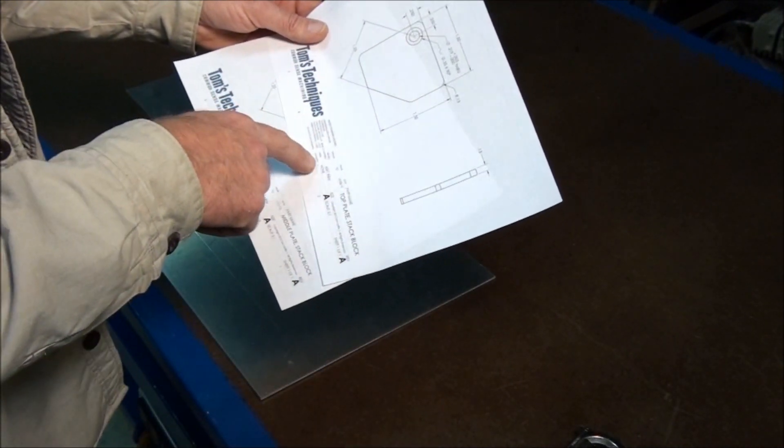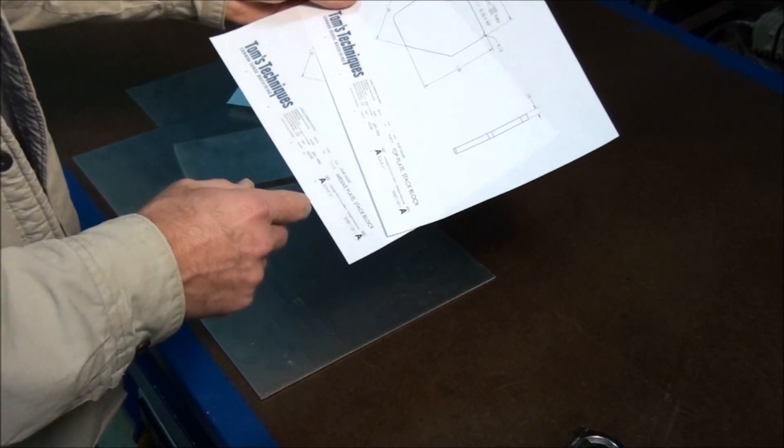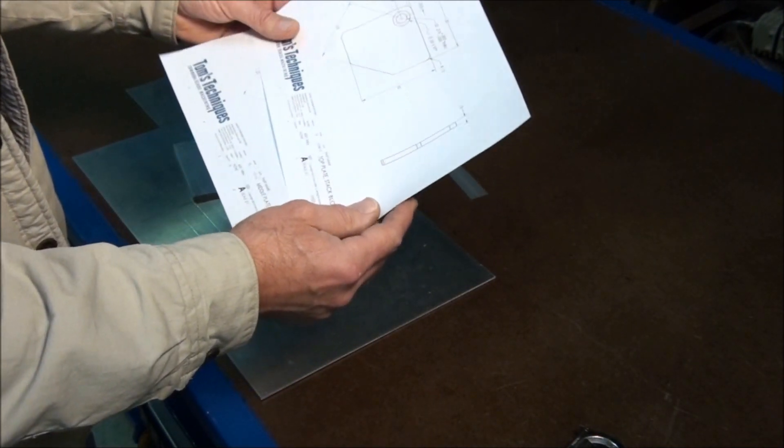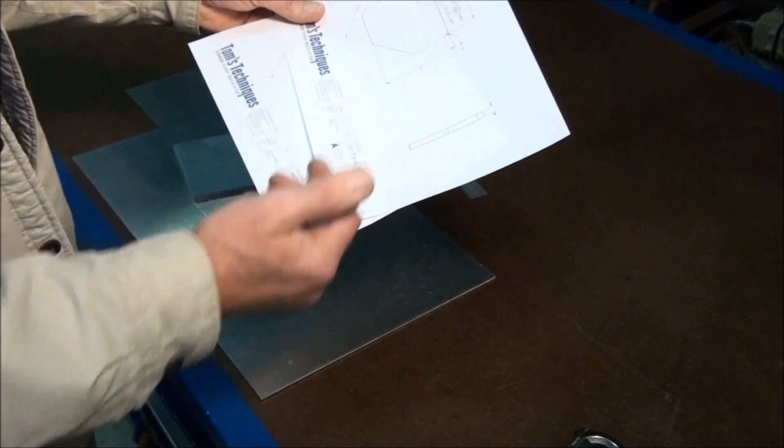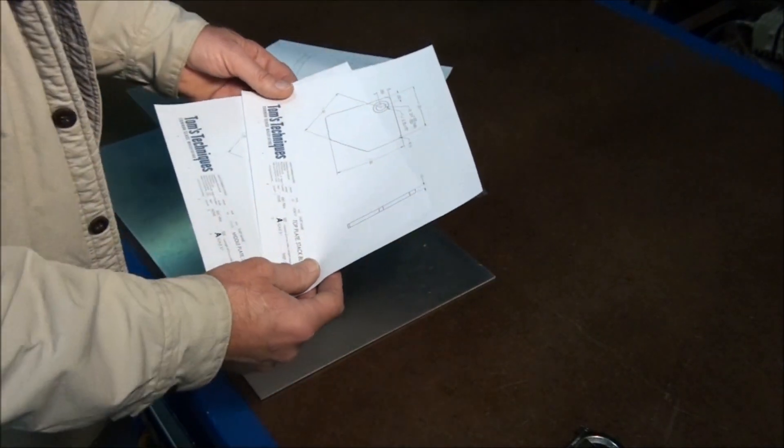Quantity-wise, we have a quantity of one of the top plate and a quantity of 10 of the middle plate, and we're making two of them. So we need 22 pieces sawed out and milled to size. Let's get started on that part.